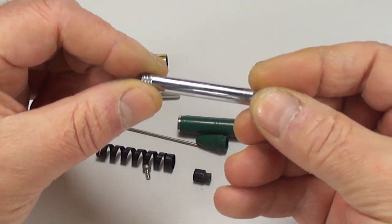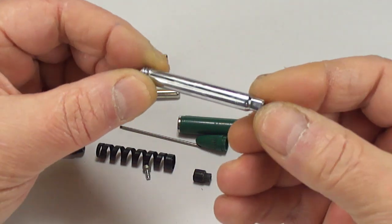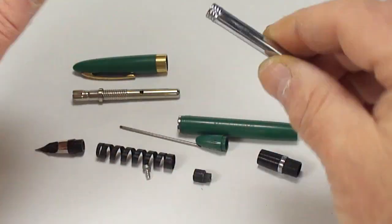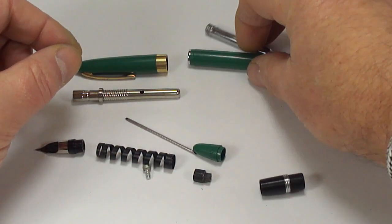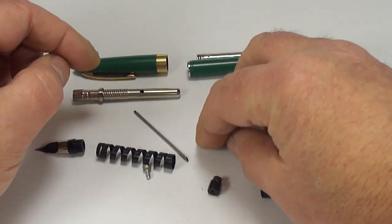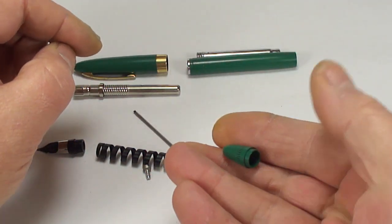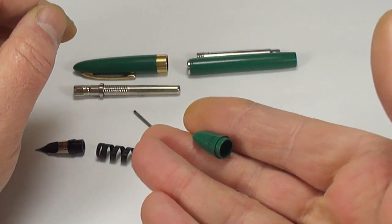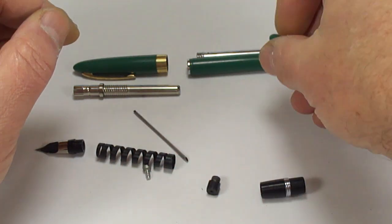Inside the barrel we've got this what we term as a filler tube. Let's put that to one side. To the end of the barrel we have a what we term as a blind cap.